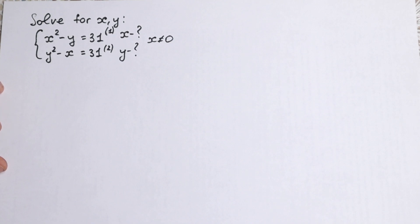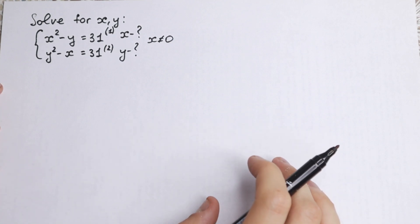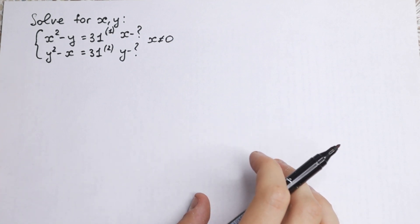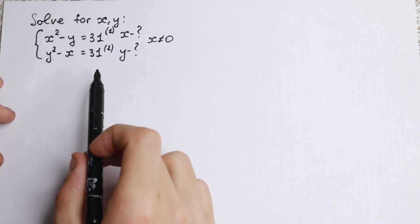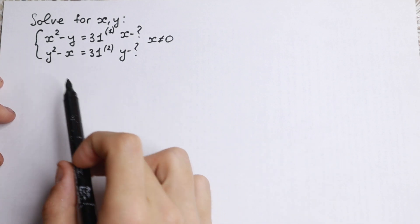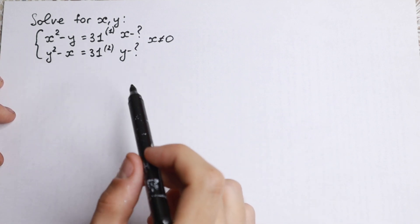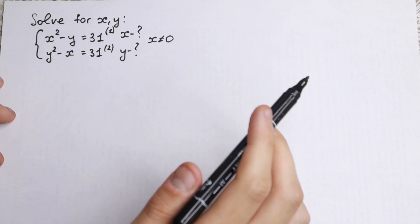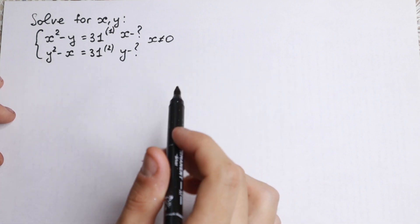Hello everyone! Welcome back to higher mathematics. Happy to see you here. We have a really interesting system of equations today: x squared minus y equal to 31, and y squared minus x equal to 31. How can we solve this interesting system of equations?